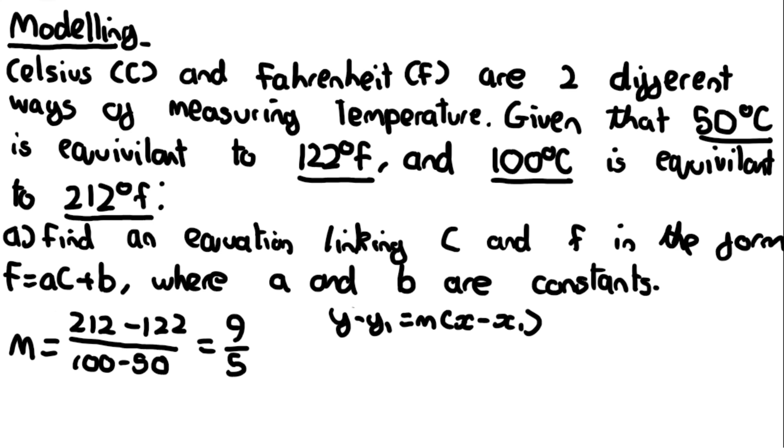We can rewrite this in this example as f minus f1 equals m times c minus c1, because we're treating f as y and c as x. Then we can do f minus f1. We can use either of the two coordinates. I'm just going to use 50 degrees and 122.